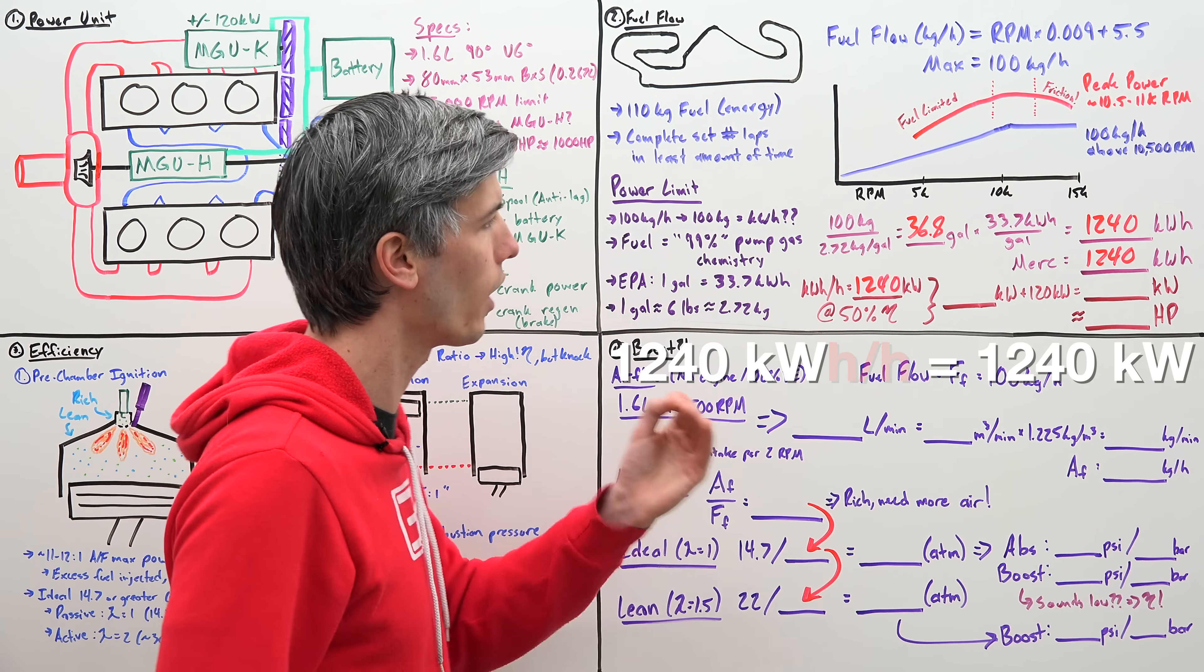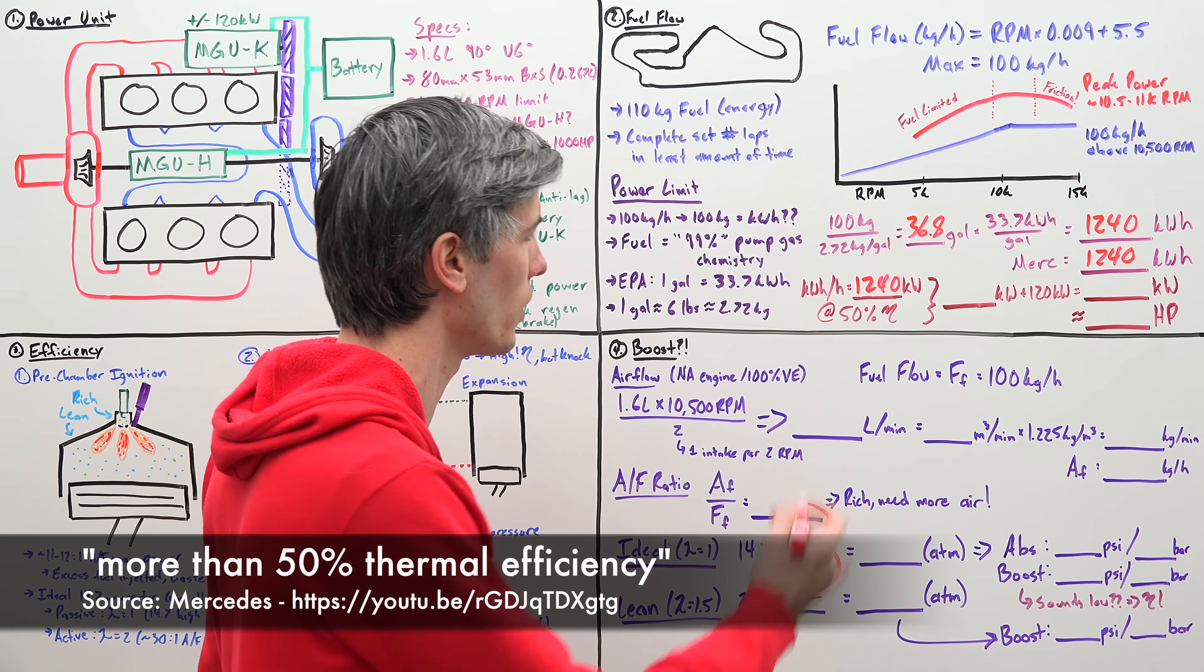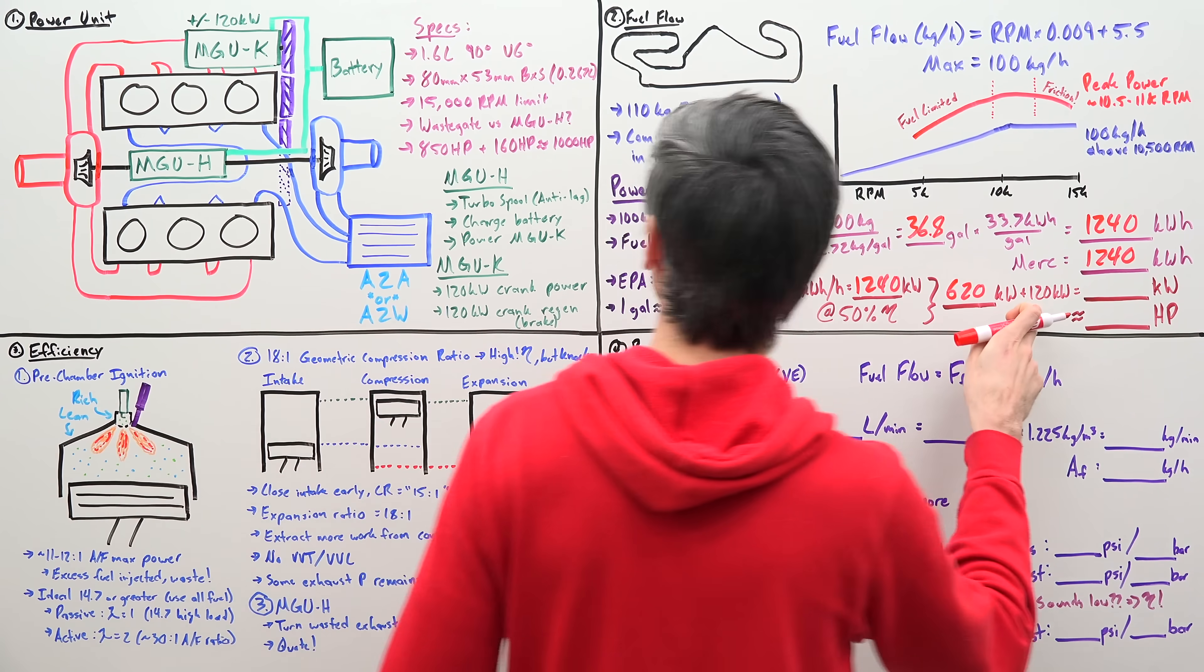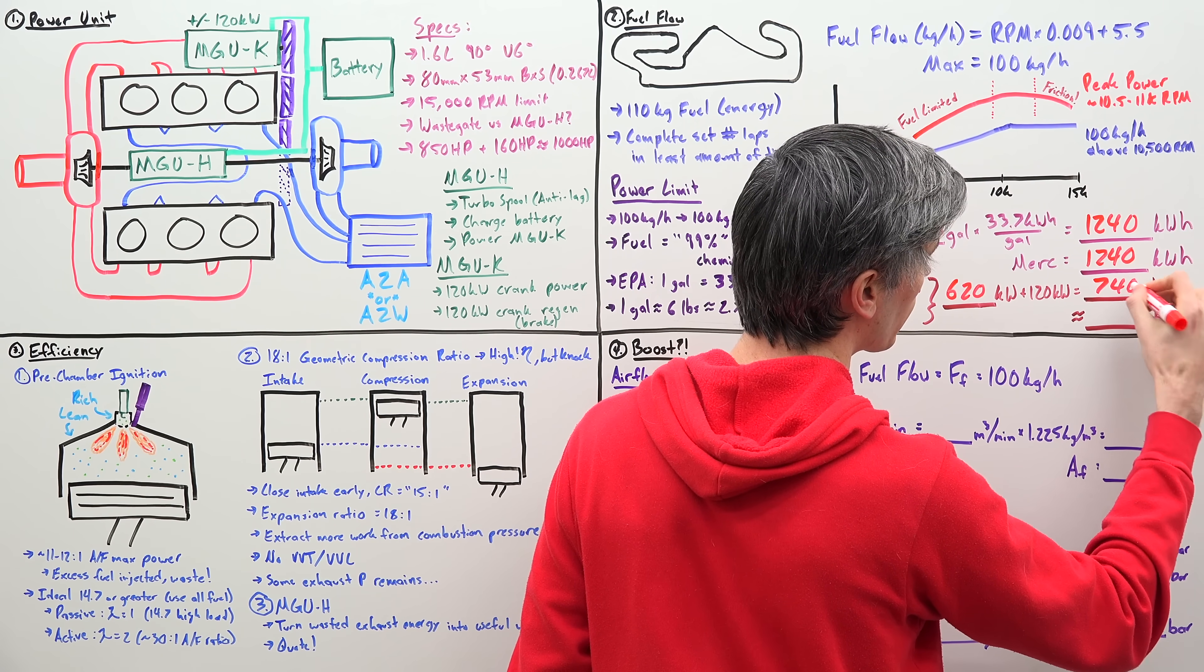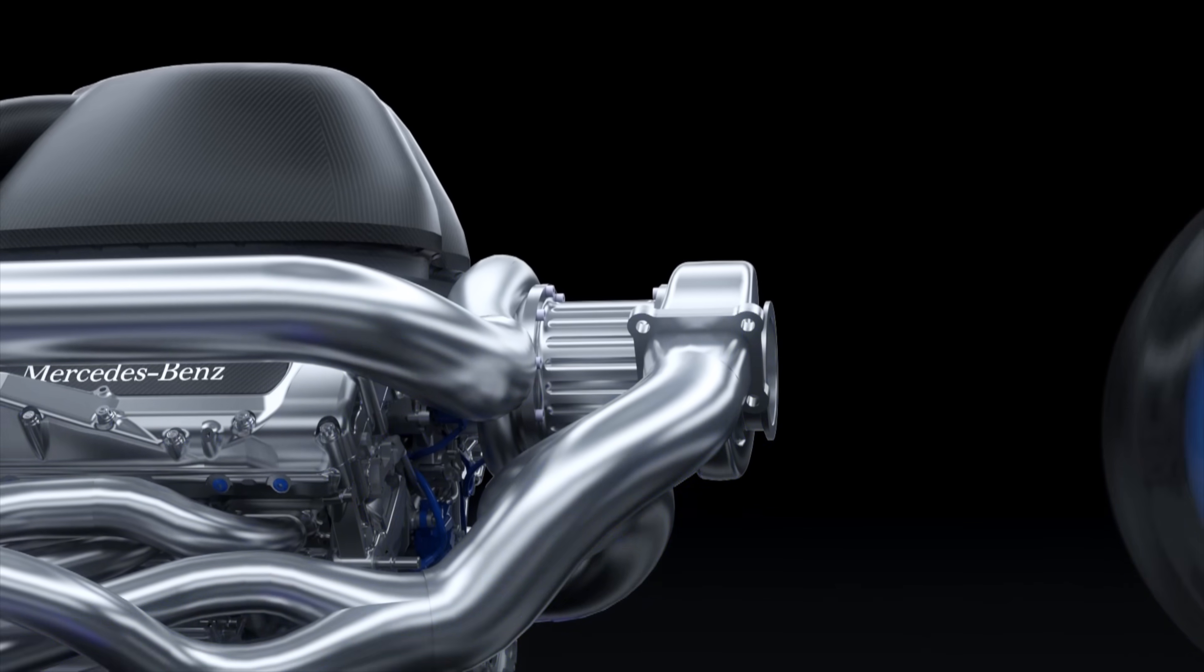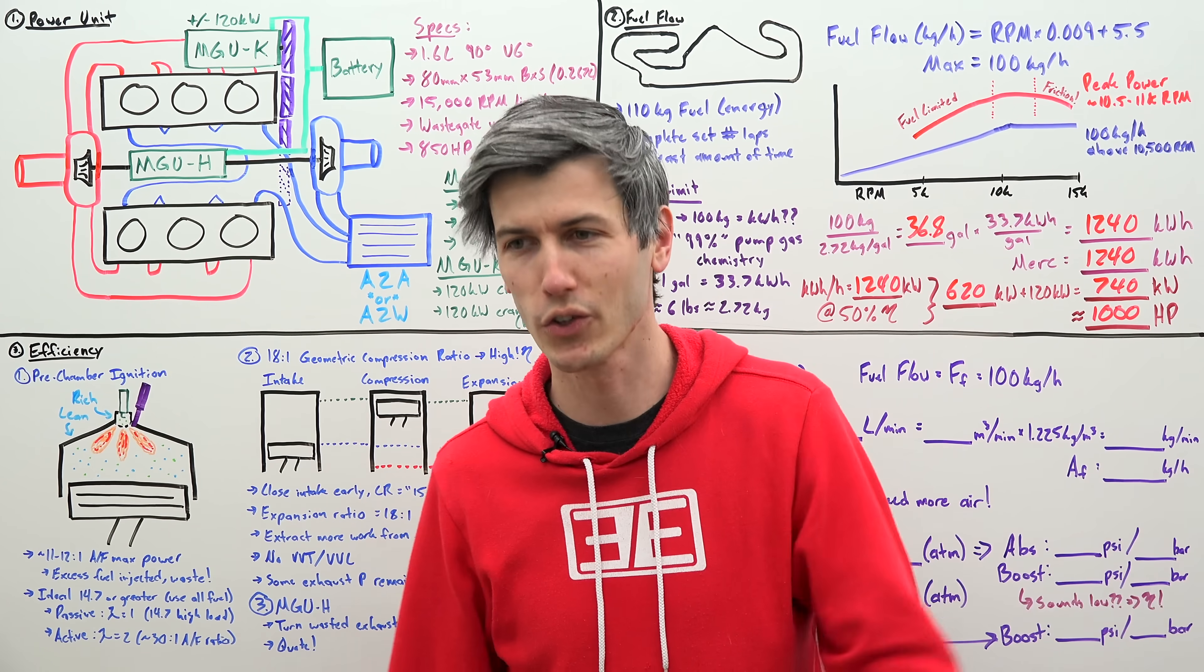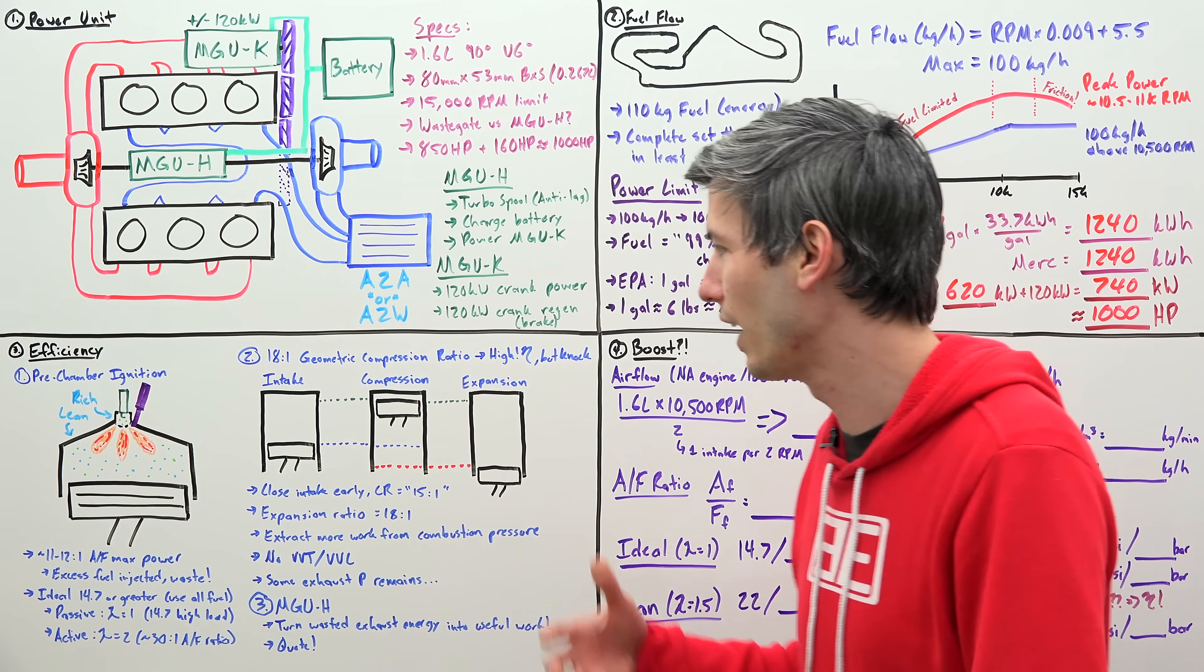OK, so we know that our engines are limited in power by fuel, which is limited to 1,240 kilowatt hours per hour. In other words, our engine has a limit of 1,240 kilowatts. Now, that would be if we were operating at 100% thermal efficiency. We know these engines can exceed 50% thermal efficiency. So, dividing that number by two, meaning our engines can create 620 kilowatts, or about 830 horsepower, plus 120 kilowatts from our MGU-K, giving us a grand total of about 740 kilowatts. In other words, about 1,000 horsepower. Now, naturally, your next question might be, well, how in the world are they achieving 50% thermal efficiencies? It's impressive for today's internal combustion engines to reach 35% thermal efficiency.